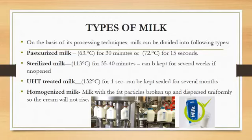Pasteurized milk has two processing techniques. Pasteurized milk can be treated by heating at 63 degrees Celsius for 30 minutes, or at 72 degrees Celsius for 15 seconds. After this treatment, milk can be stored for up to several weeks if it is not opened. UHT treated milk is heated at 132 degrees Celsius for one second, and after UHT treatment, this milk can be kept for several months.